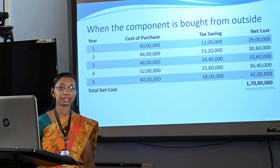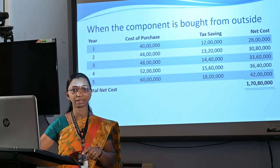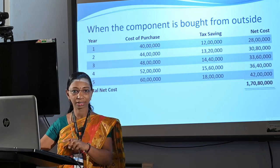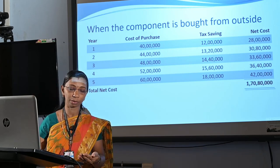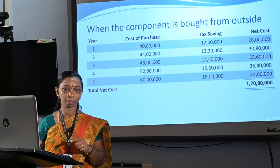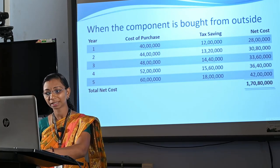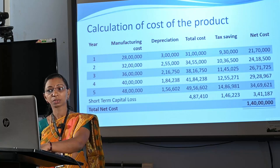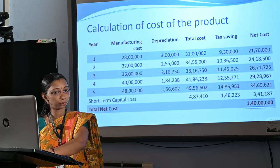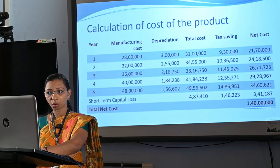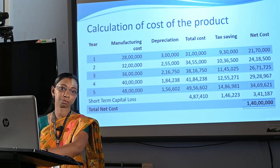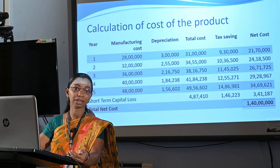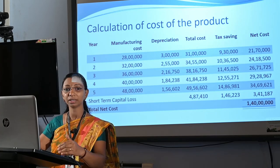Then we have to take a decision on whether to manufacture the product by the company itself or to purchase it from outside market. We compare the total net cost of manufacturing with the total net cost of purchase. Total net cost of purchase is Rs. 1,70,80,000 and total net cost of manufacturing is Rs. 1,40,00,000. Therefore, cost of manufacturing is less than cost of purchase, so the company should manufacture the product by itself — that will be the better decision.